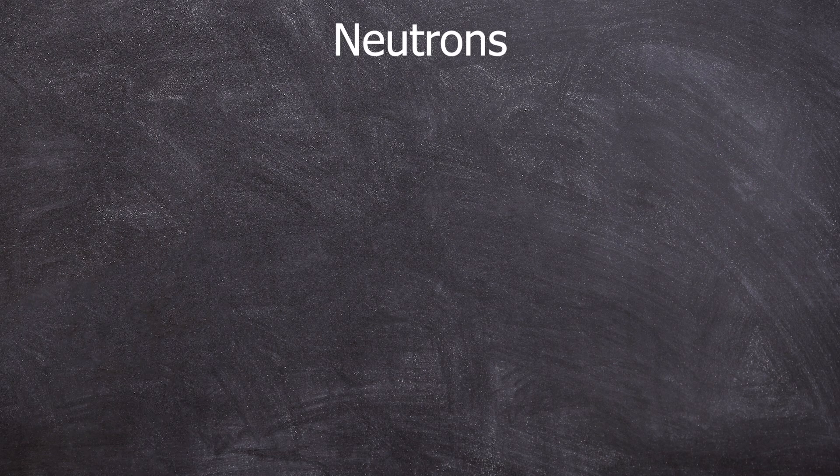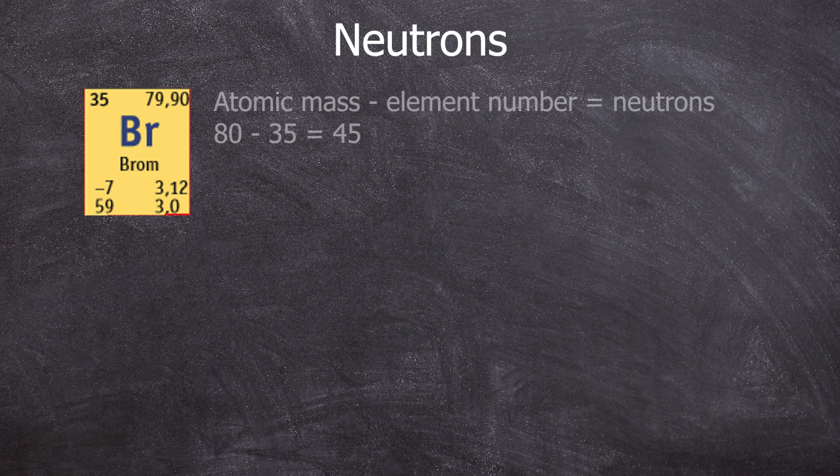Neutrons! They were first discussed in school when learning about the structure of the atom, right? Mass number minus atomic number equals the neutron number. This makes them nucleons, so building blocks of the nucleus.